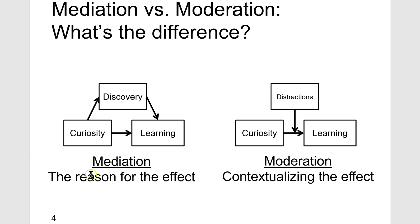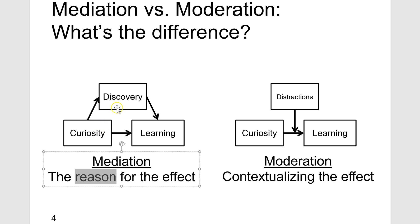A mediator is the reason for the effect the IV has on the DV. For example, the reason curiosity impacts learning is because curiosity creates discovery, and it's discovery that leads to learning.